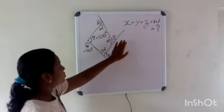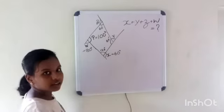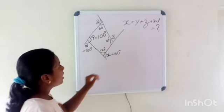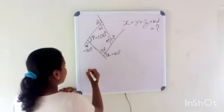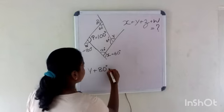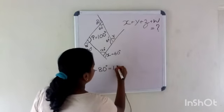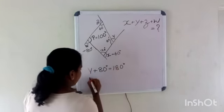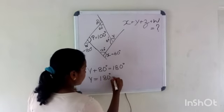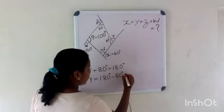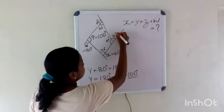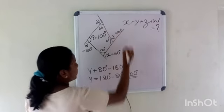Now we are going to find the value of Y. This is also a linear pair, so linear pair equals 180 degrees. Y plus 80 degrees equals 180 degrees, and Y equals 180 minus 80, which equals 100 degrees.